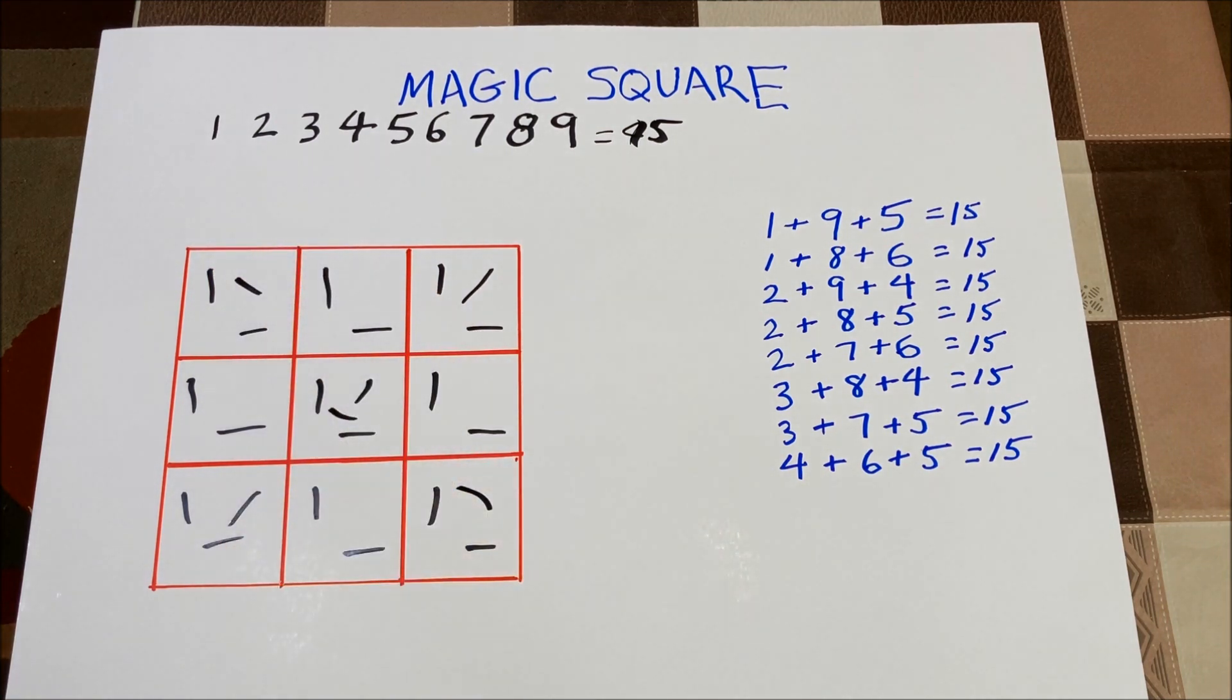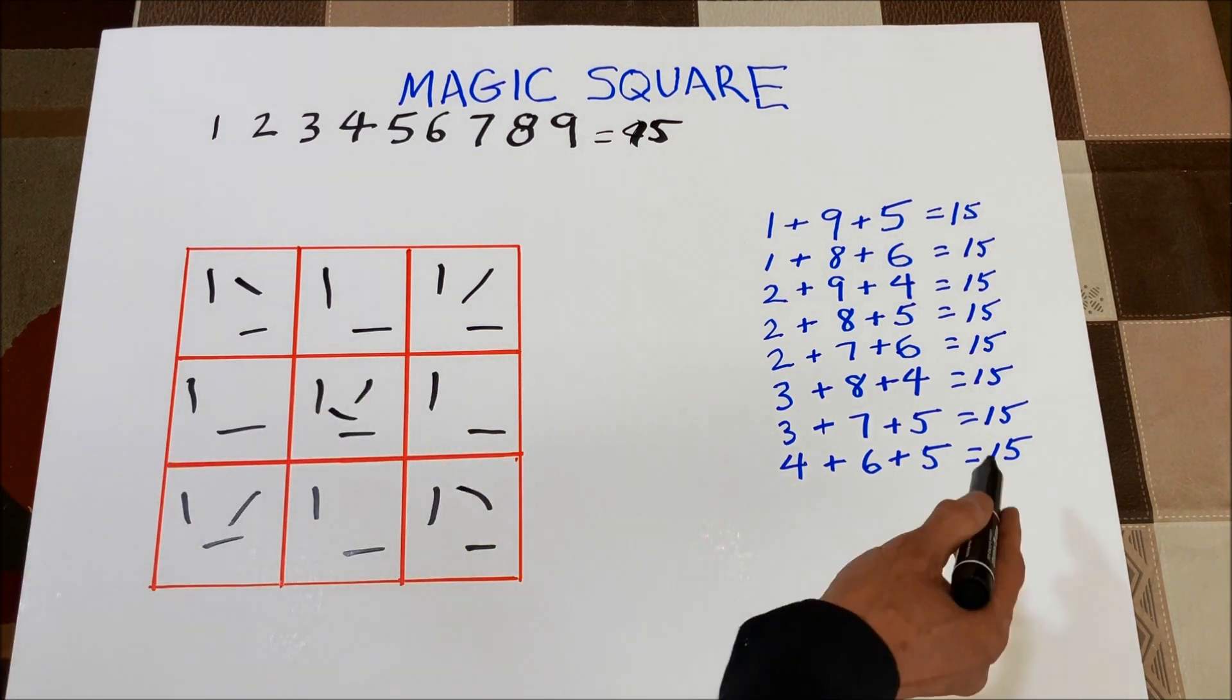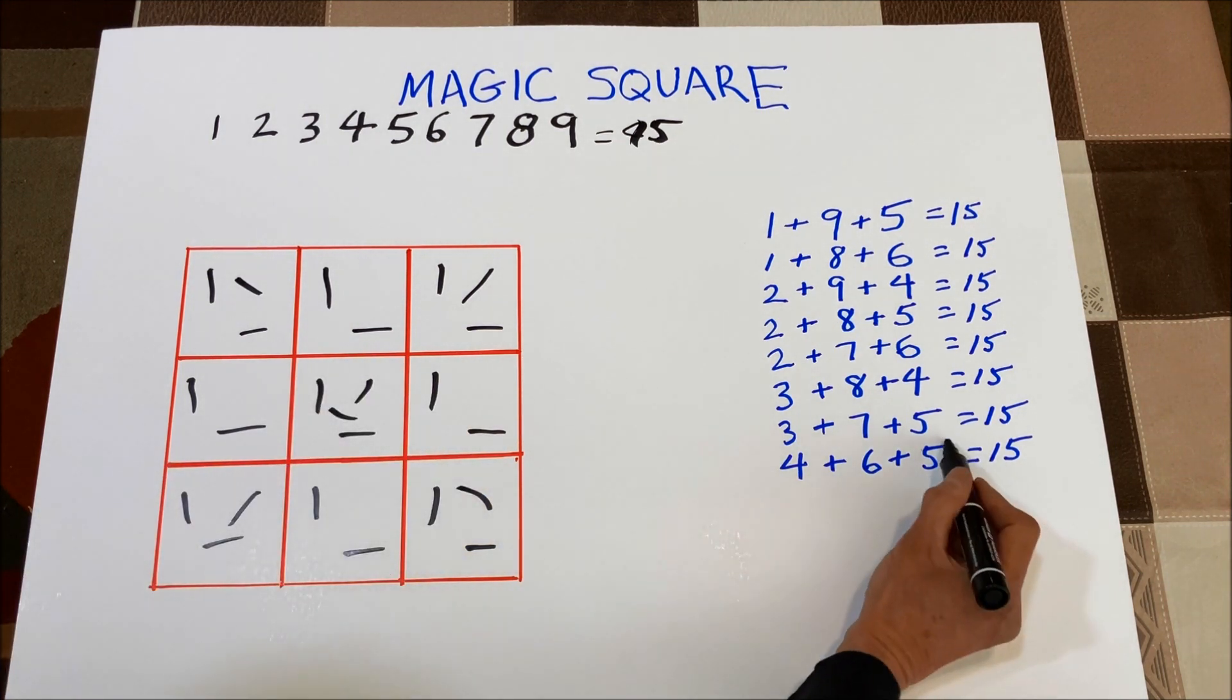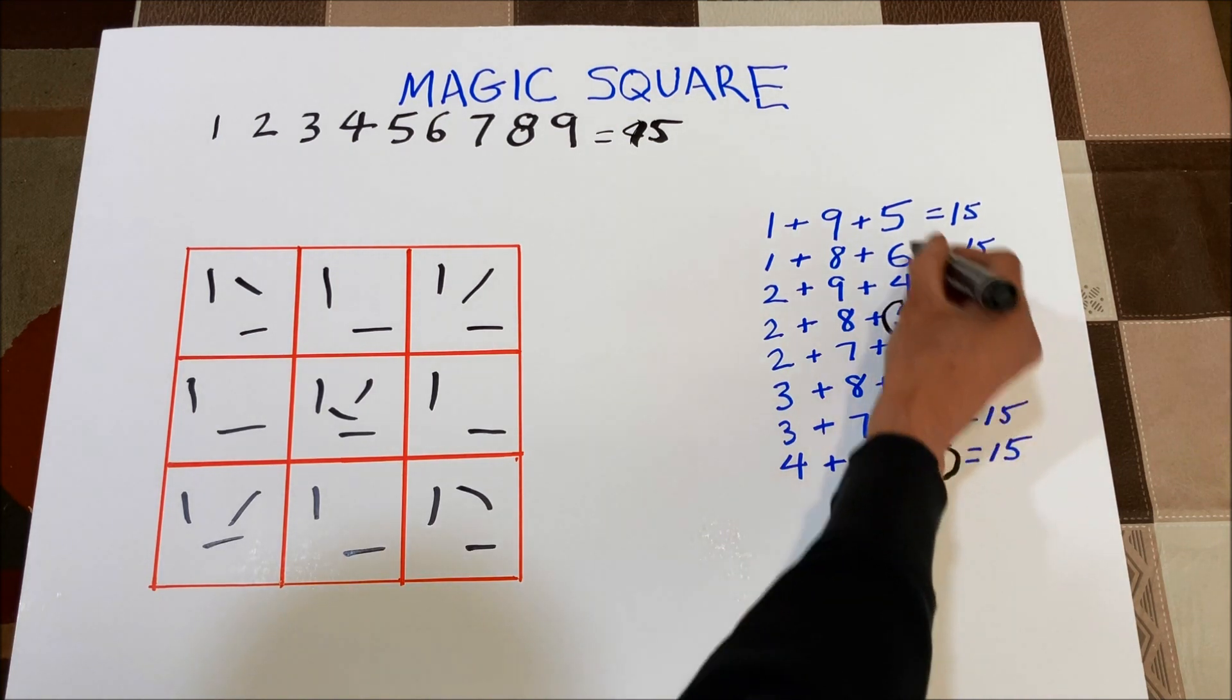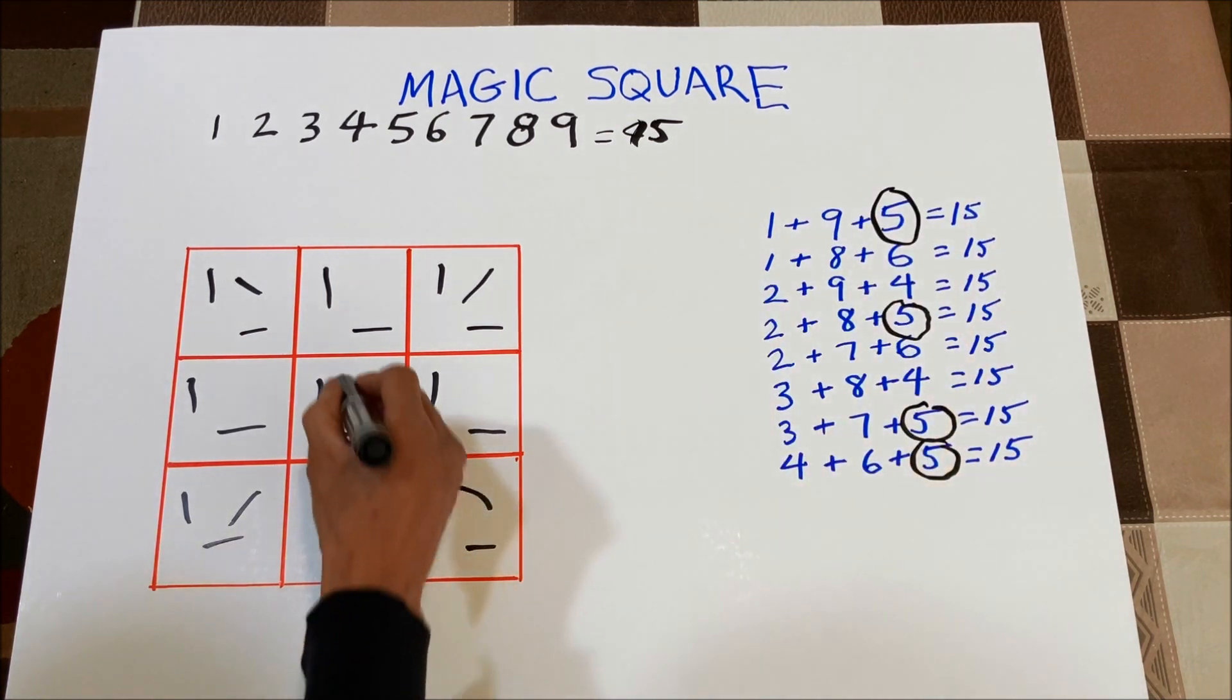The middle square, that number is used four times. Look over here on the right. The number five, if you might have guessed it, is used four times. Number five.